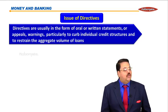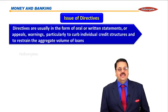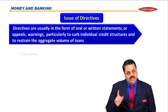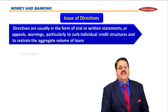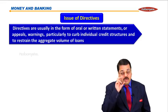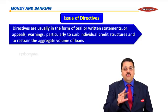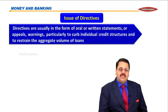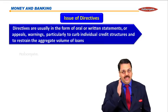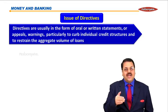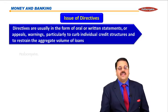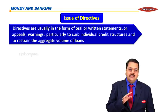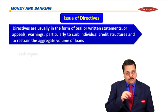There is no more money, no more goods — so what will the money do? Issue of directives: to curb the flow of credit, to ensure that money goes only in the desirable sectors. If there is a lot of money, then it goes into speculation.